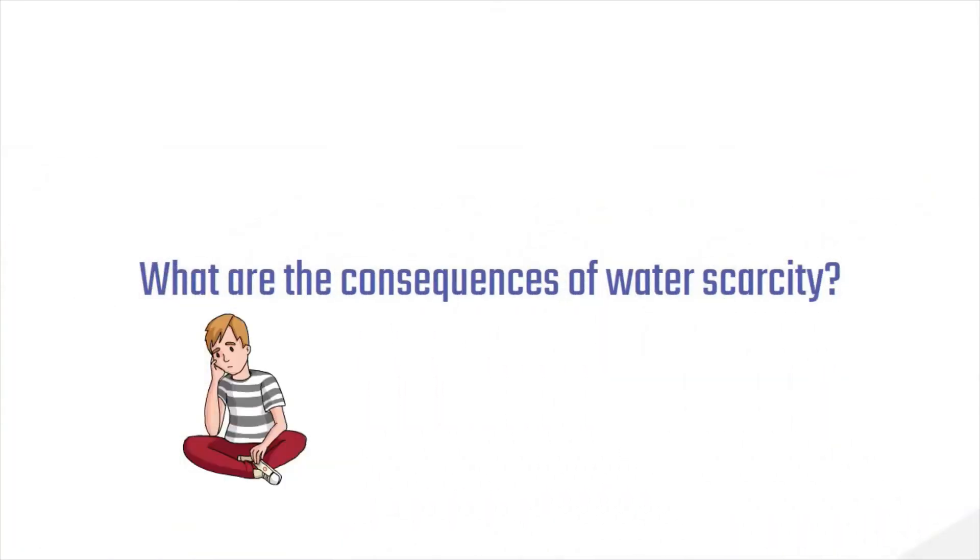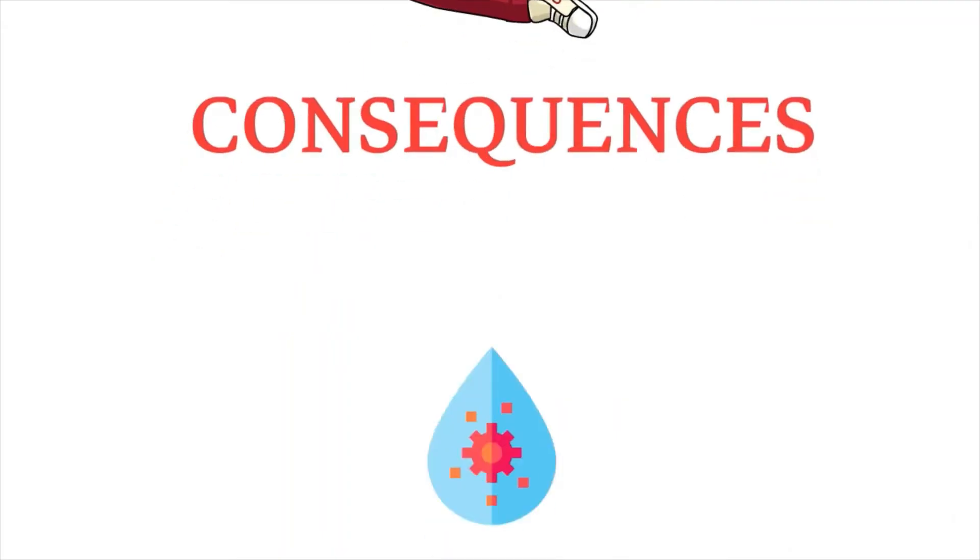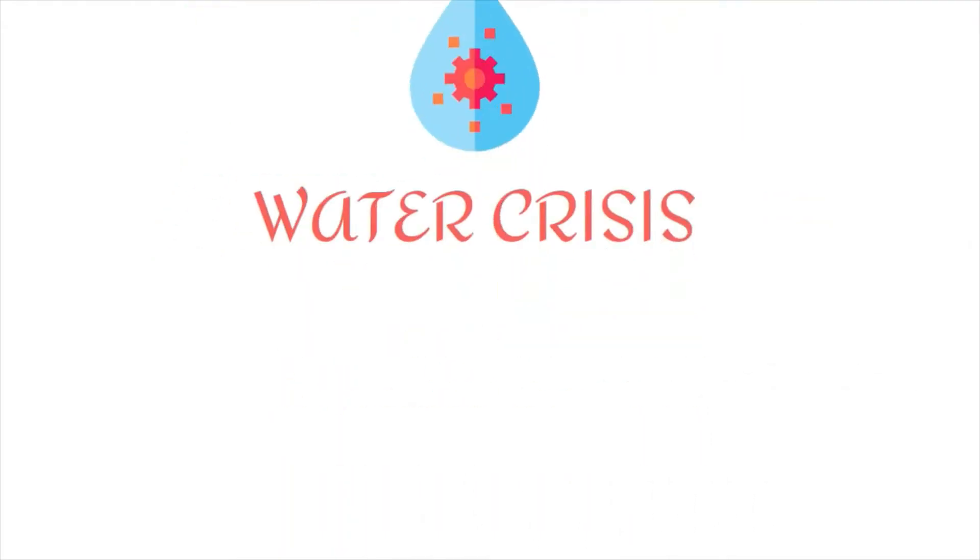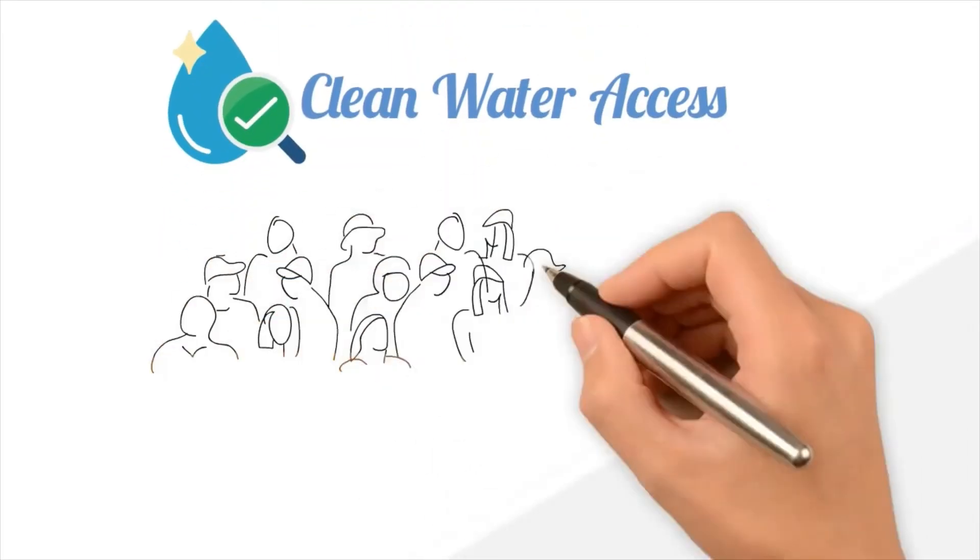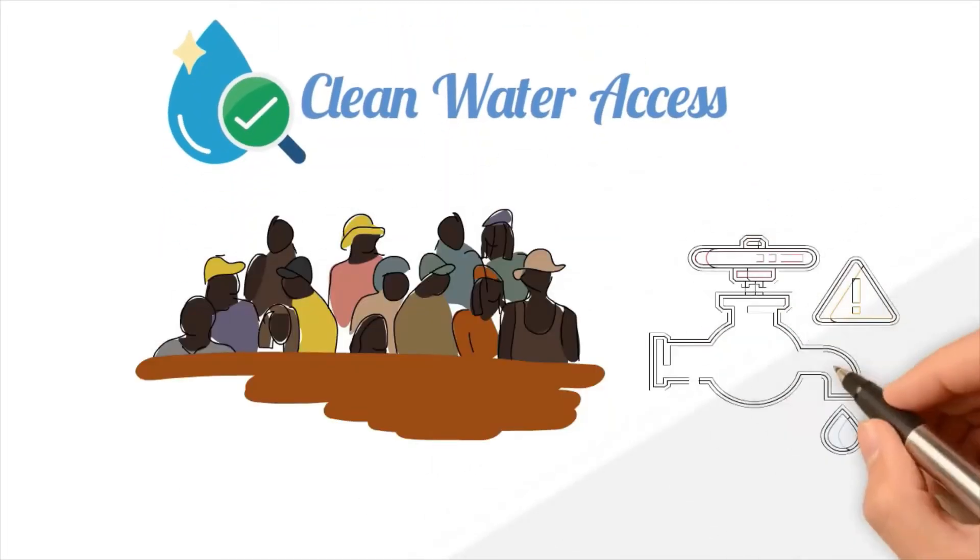What are the consequences of water scarcity? There are a number of ramifications tied to the water crisis, including lack of access to safe, clean drinking water. When people can't access clean water for drinking, agriculture, and washing, their lives are at stake.